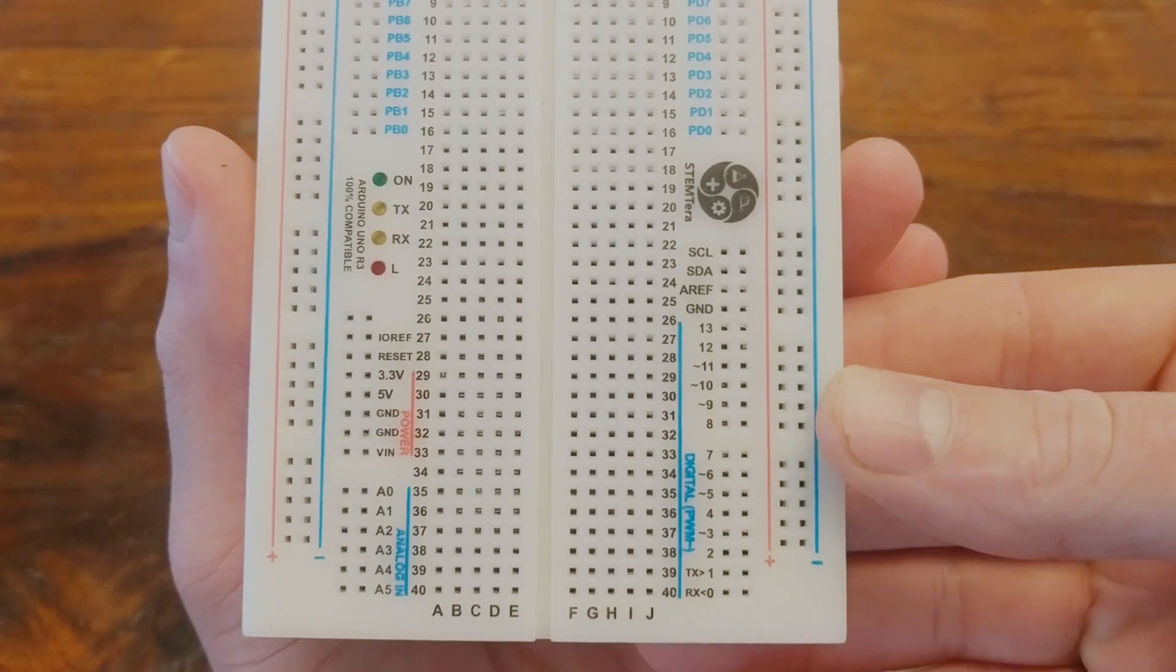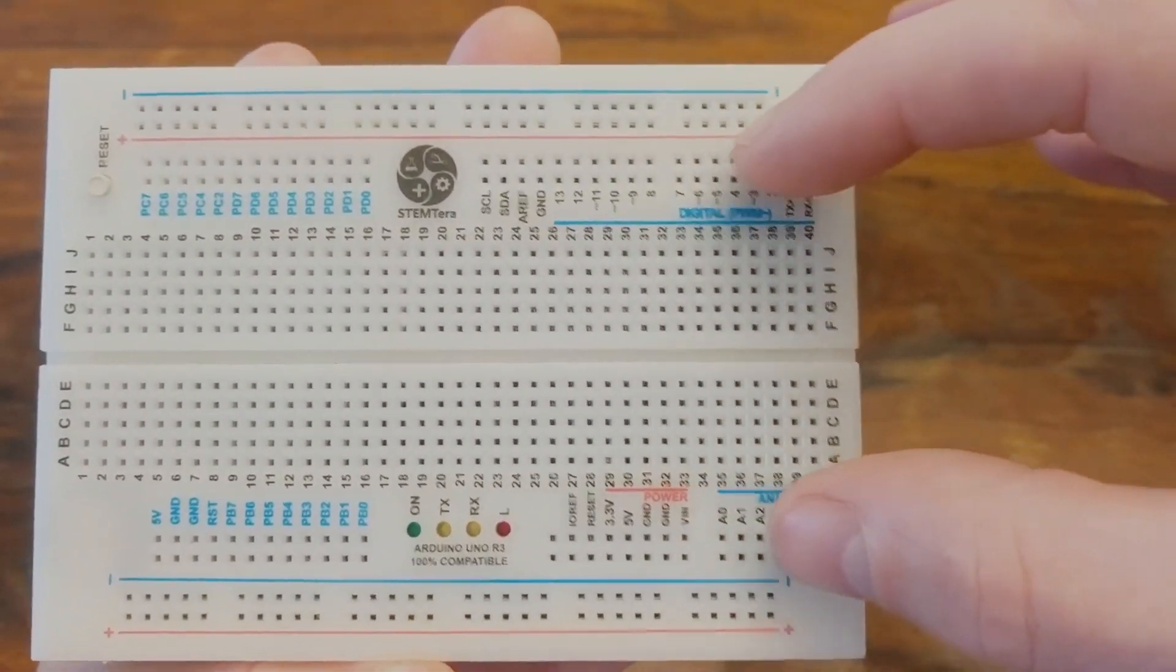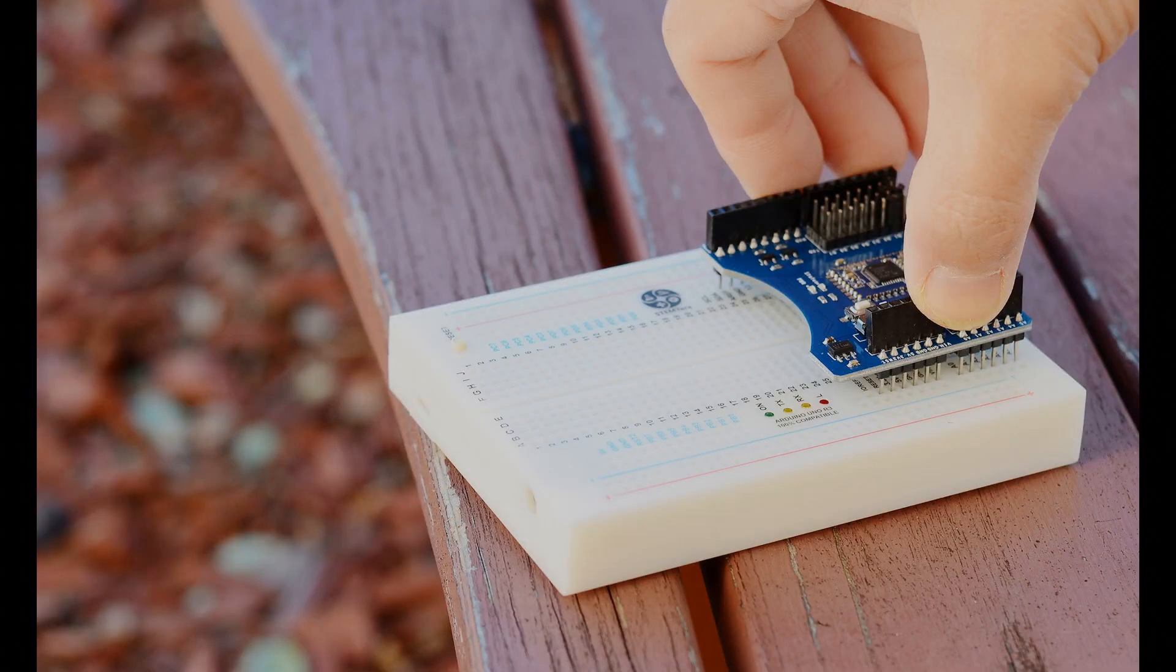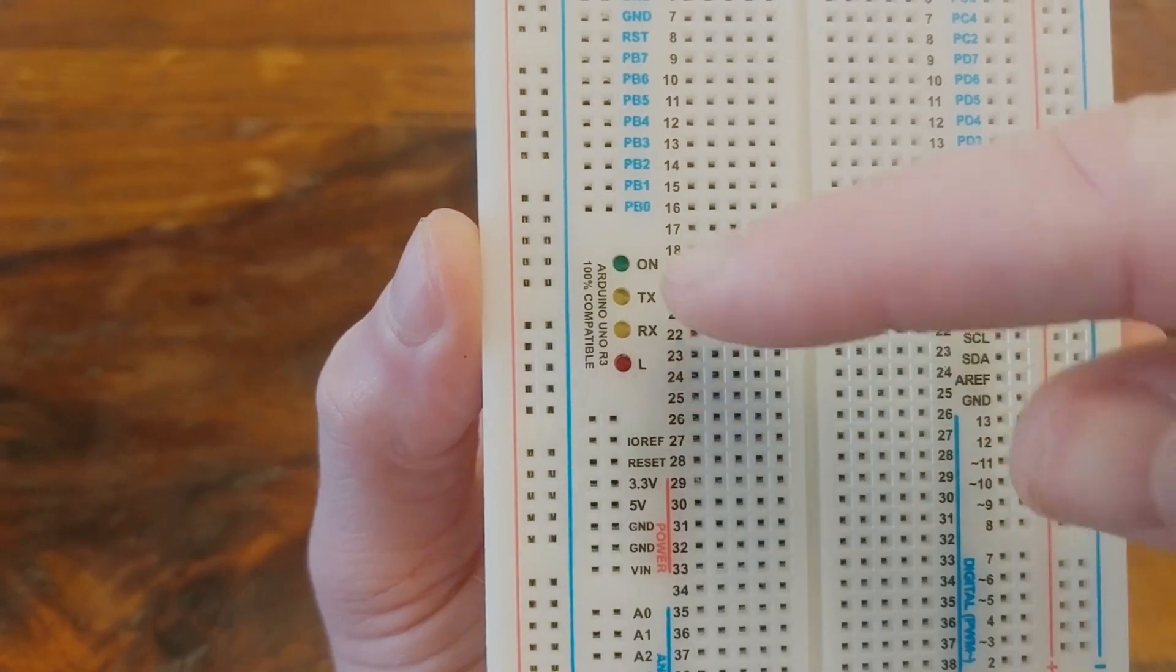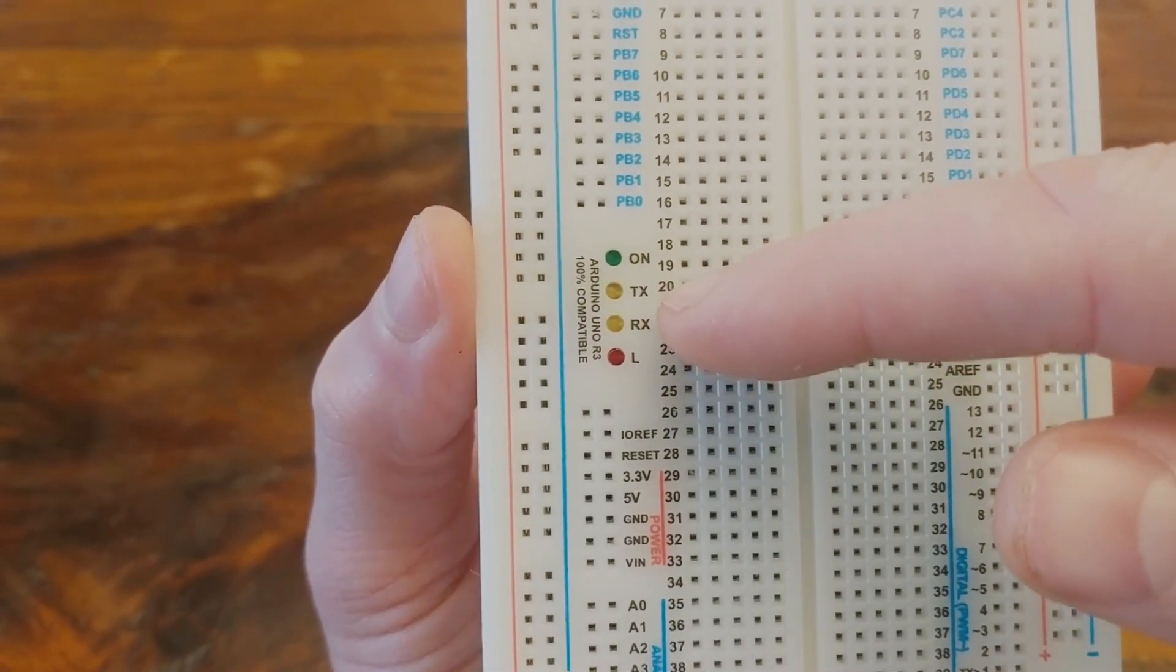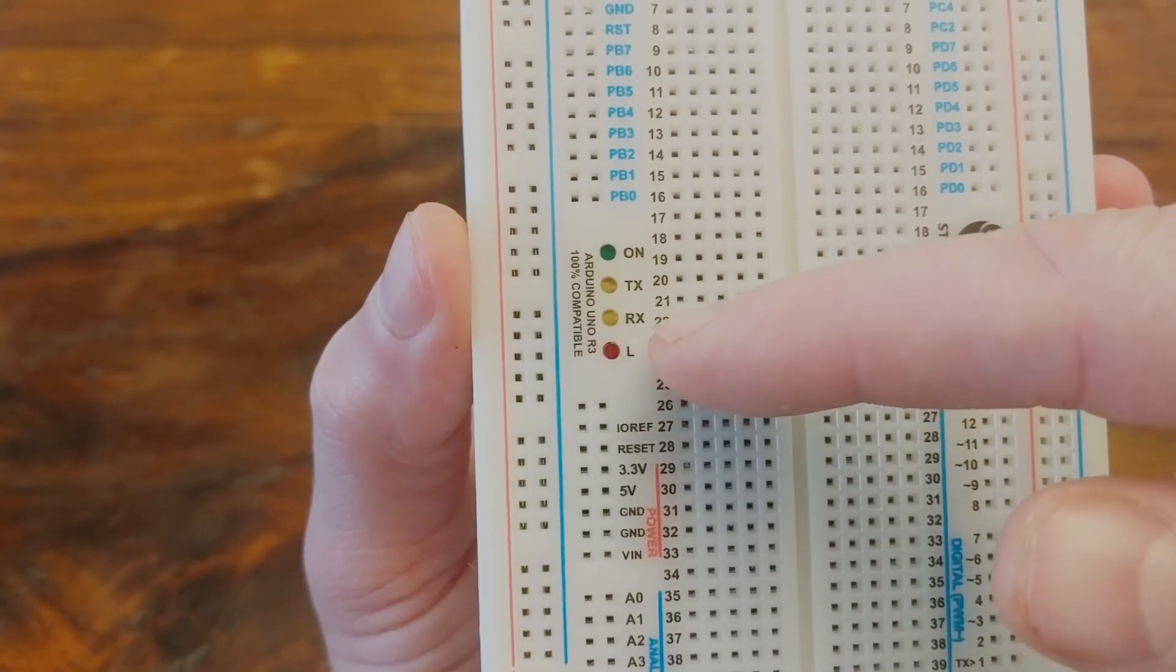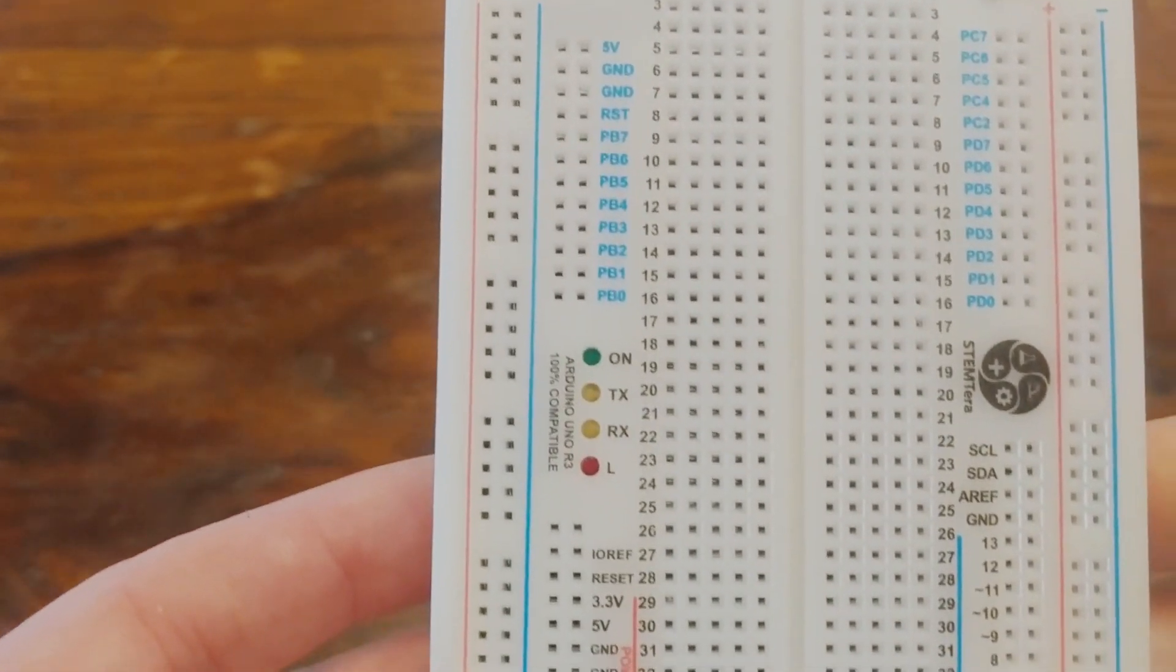You might also realize that the pin layout is the same as the Arduino Uno, meaning you can plug Arduino shields directly into the breadboard. The board has four built-in LEDs. One of them is just a power indicator. Two of them are TX RX activity indicators, and this one is a built-in LED that you can use however you'd like.